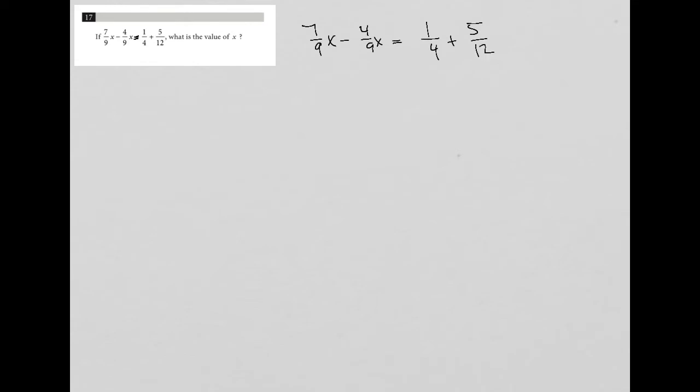So this is a single line question, which falls into my strategy of just simplify, right? So let's just simplify this and see how far we get. The good thing on the left hand side is that we already have a common denominator. So 7/9x minus 4/9x is just 3/9x.